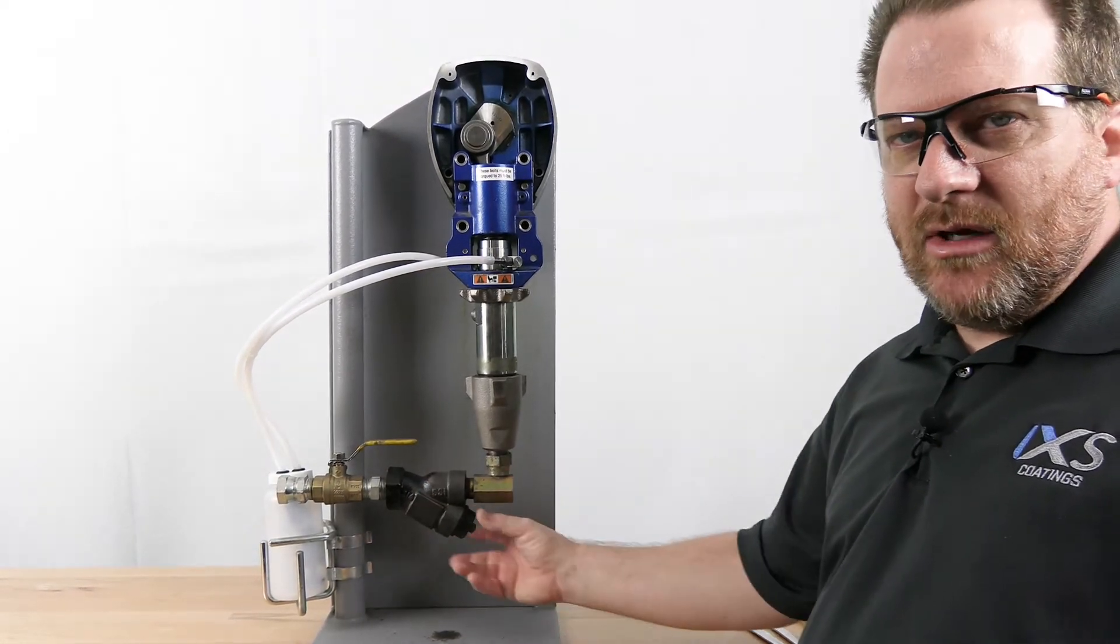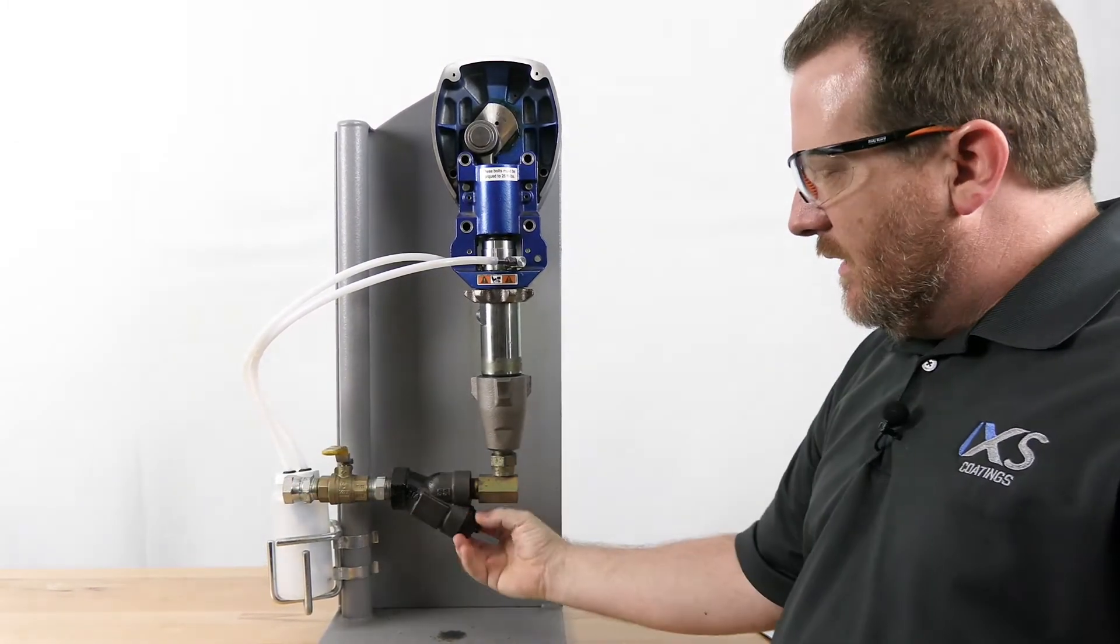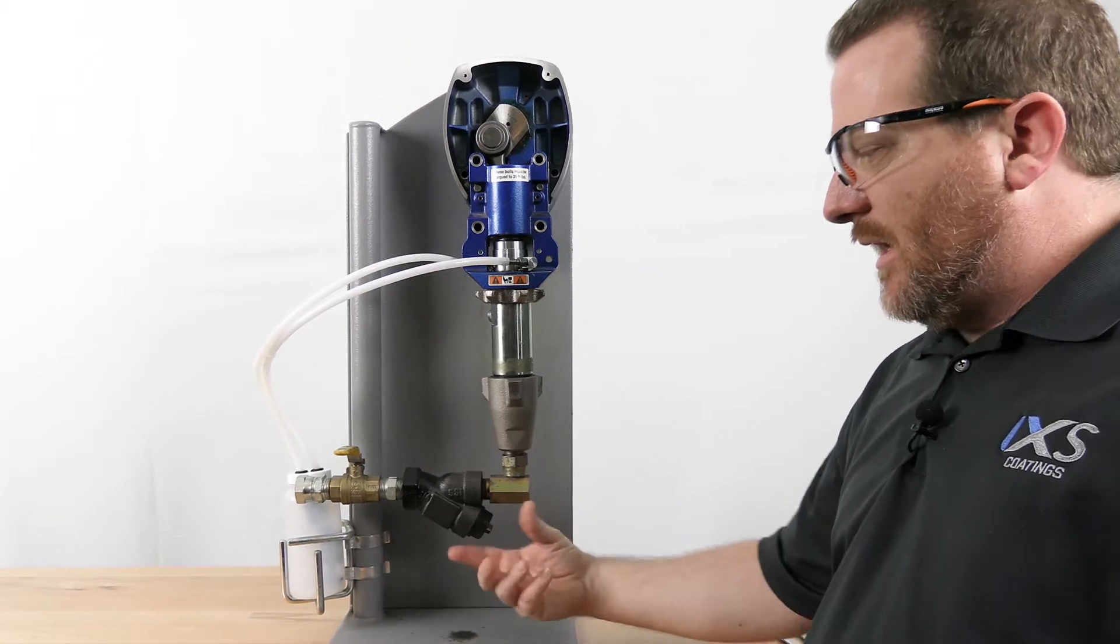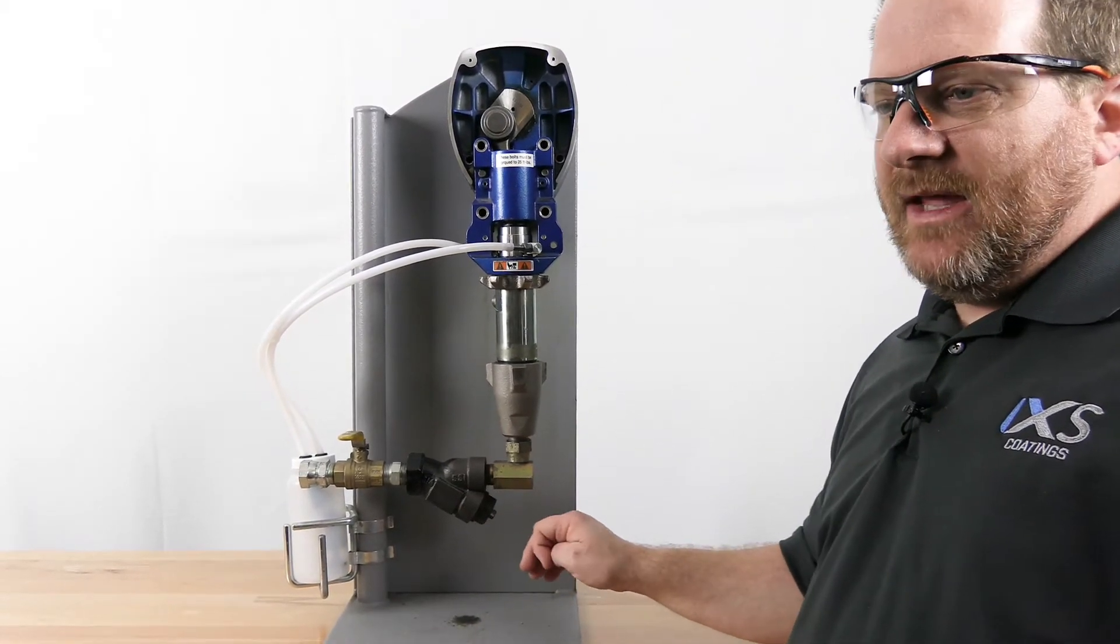Next is the Y strainer. Make sure you shut the pump off, shut this valve off, undo this nut, check that and clean that screen out. Make sure you've got no restriction there.